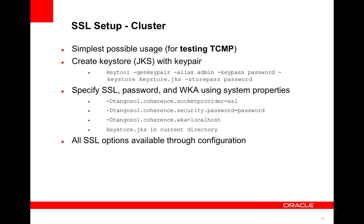The simplest possible usage shown here is not necessarily recommended for production, but it's a really simple way to get SSL up and running for testing. Just create a keystore with the Java keytool using a self-signed cert and an obvious password. Put it in the current directory, set the password and WKA using Java system properties, and you're good to go. All SSL options are also available through configuration — check the operational config documentation new for Coherence 3.6.